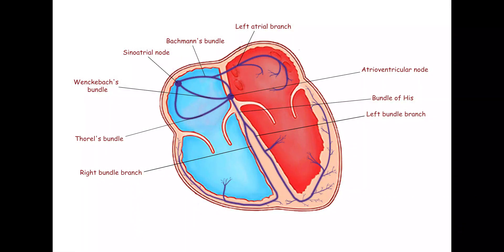The left bundle branch divides into two fascicles, the anterior and posterior fascicles. The terminal branches of the conduction system of the heart are the Purkinje fibers.